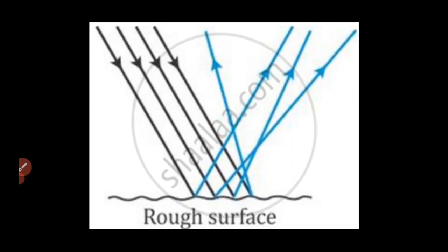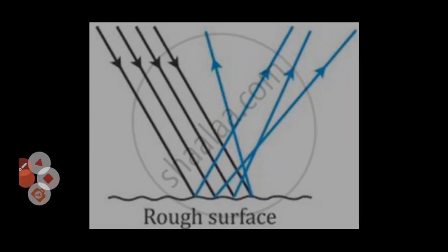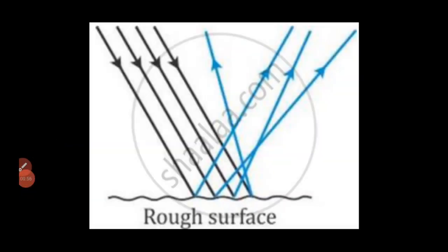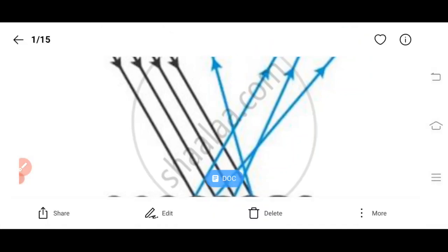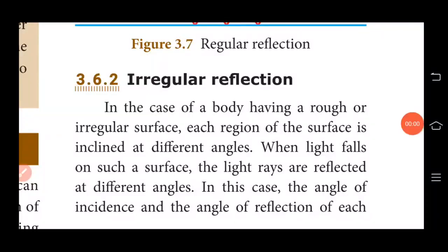An example of irregular reflection is reflection of light from a wall. Up to this topic — irregular reflection — our unit 3 light lesson is over. Now let me explain the book exercises: choose, fill in the blanks, and match.